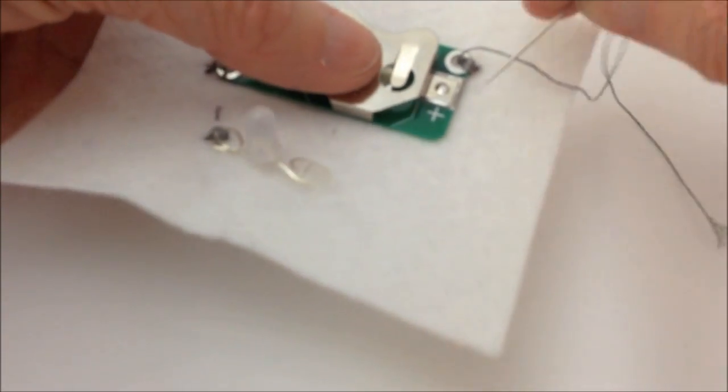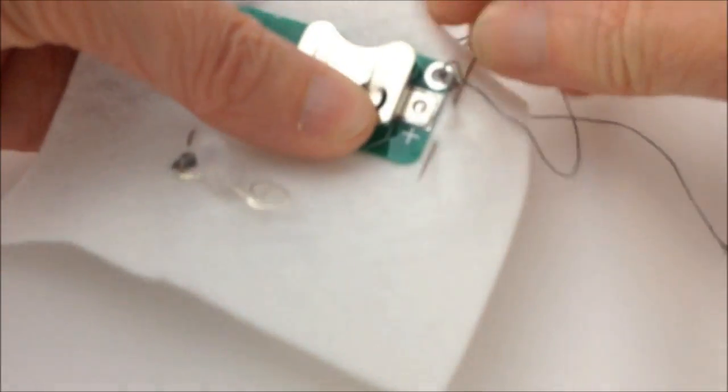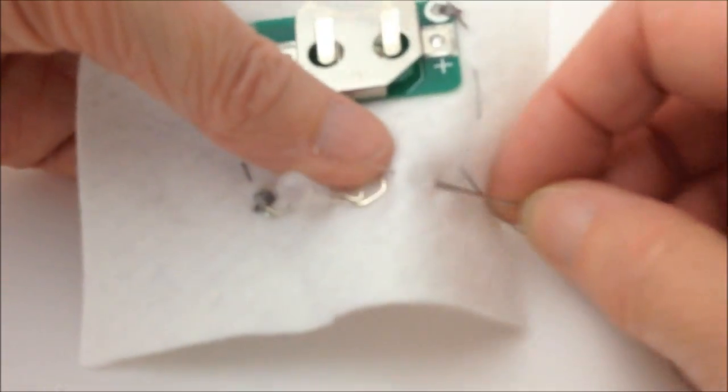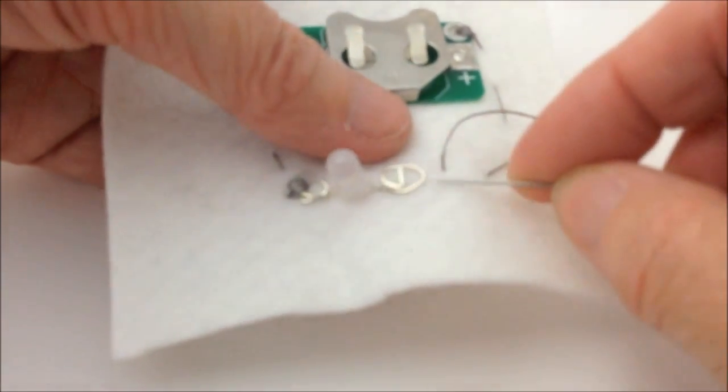Now we're going to take our thread from the side of the cell holder right down to where the LED sits using small running stitches, just the same as we did before.